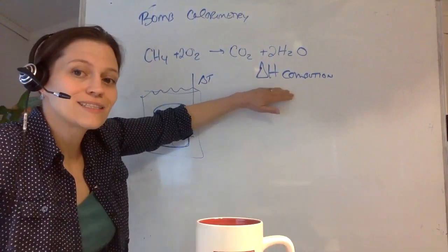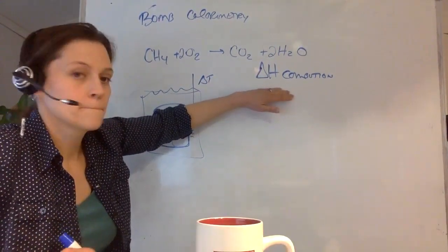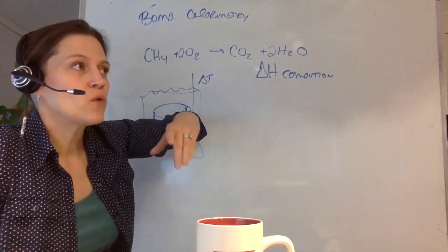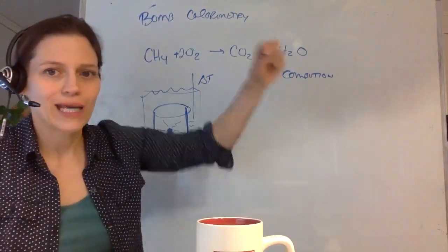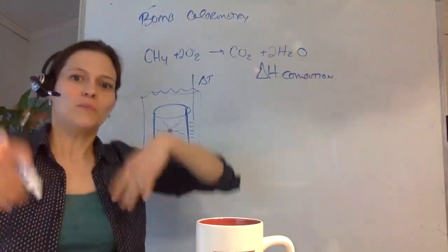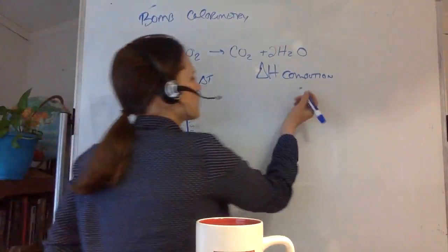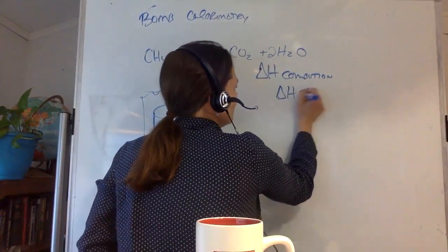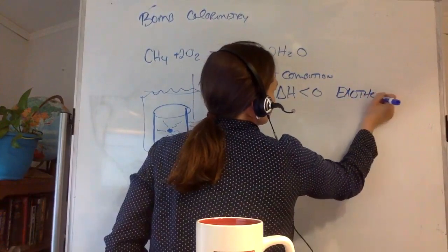When heat energy is given off, what's the sign that we use? Think about a bank account. When money goes out of the bank account, the bank account goes negative. When money comes into the bank account, it goes positive. So the heat of combustion should be a negative value — delta H is going to be less than zero for an exothermic process.